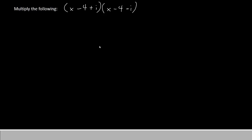Alright, our problem this time is to multiply two complex numbers together. The first is x minus 4 plus i, the other is x minus 4 minus i. Now each of them have three terms, they're both trinomials.